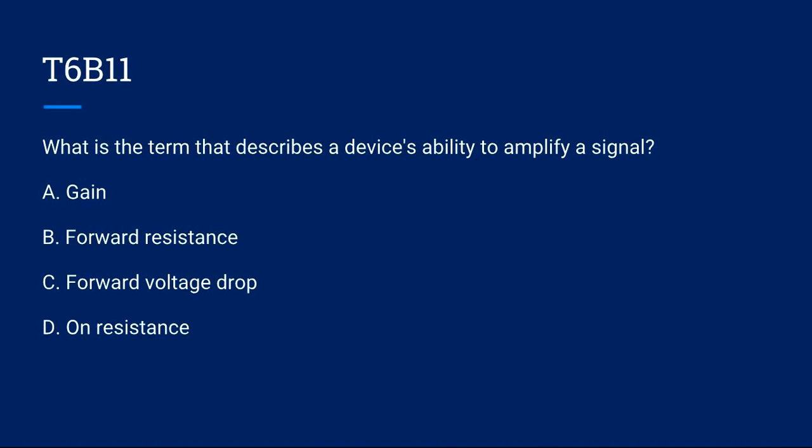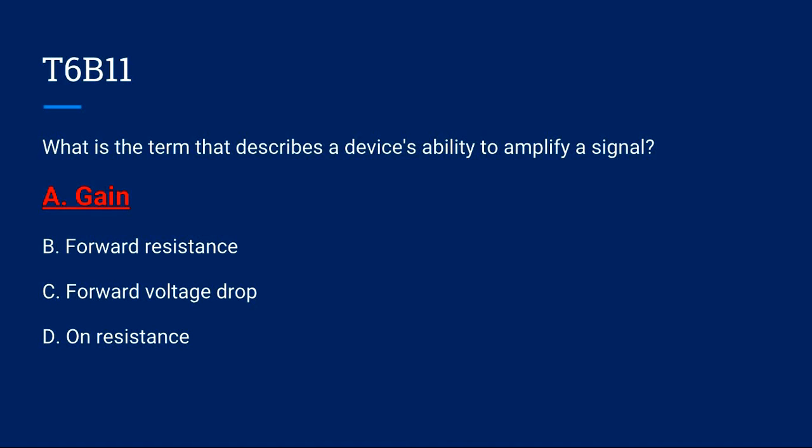T6B11: What is the term that describes a device's ability to amplify a signal? A, gain. B, forward resistance. C, forward voltage drop. Or D, on resistance? The correct answer is A, gain.